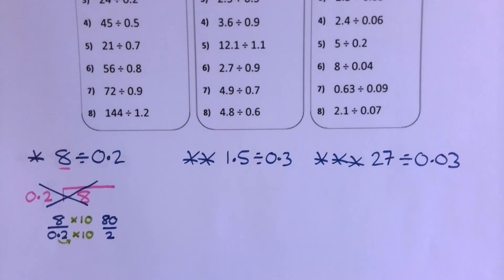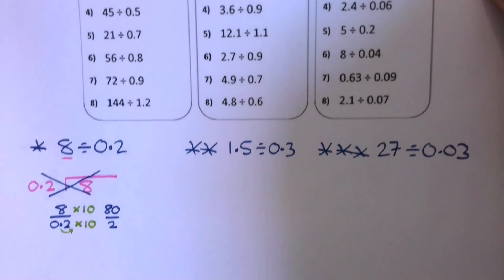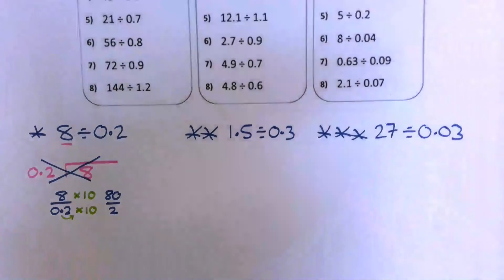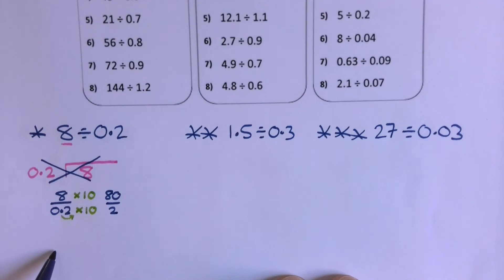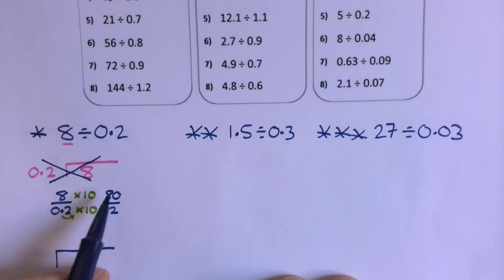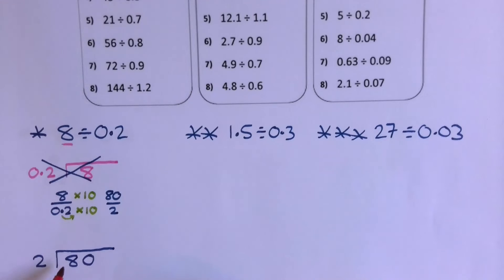So that's going to give me 80 divided by 2. Now, in fairness, I could probably do that by simplifying the fraction. But what I want to show you how to do is do that as a bus stop. So now we're just going to say, what we want to do is 80 divided by 2 as a bus stop. So 2's into 8 go 4 times, and 2's into 0, no times, so the answer is 40.